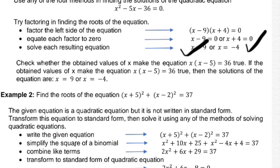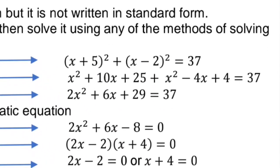Example 2: find the roots of the equation quantity of x plus 5 squared plus quantity of x minus 2 squared equals 37. First, simplify by squaring x plus 5 and x minus 2. For x plus 5 squared: the first term is x squared, the second term is x times 5 times 2 which is 10x, and the third term is 5 squared which is 25. So x squared plus 10x plus 25.